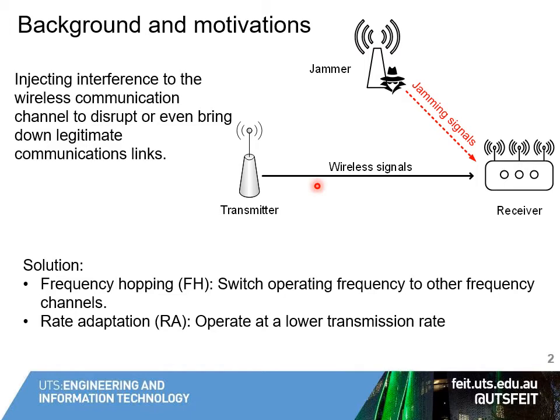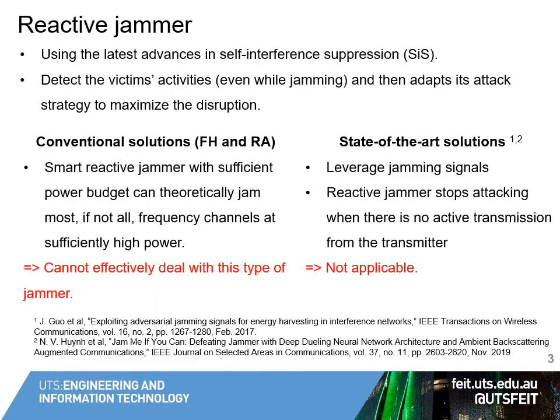The second solution is rate adaptation. This technique allows the transmitter to reduce its transmission rate when the jammer attacks the channel. However, these solutions are not effective in dealing with a reactive jammer, which is the focus of this paper.